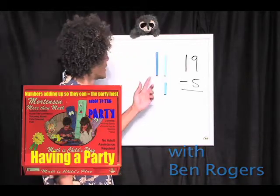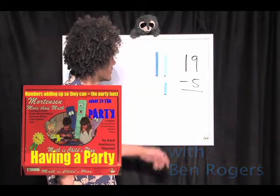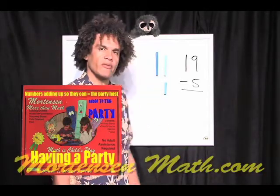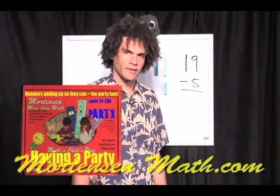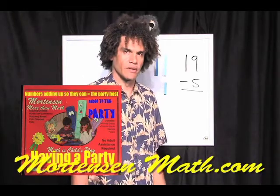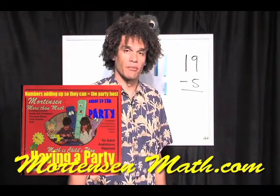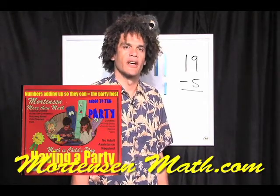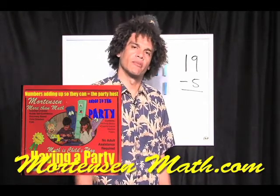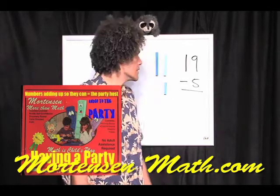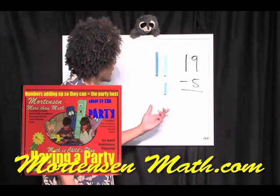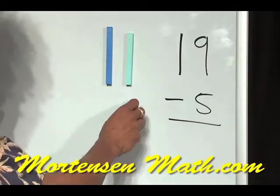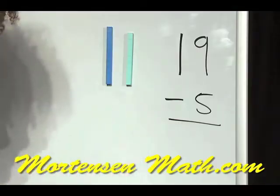Now here we have 19 take away 5. We've played games where we understand that numbers are made up of other numbers. And remember, we're having a party with 9. If 9 had a party and 5 wanted to go, who would he have to bring?